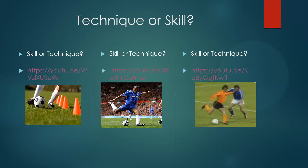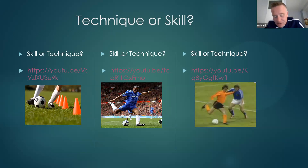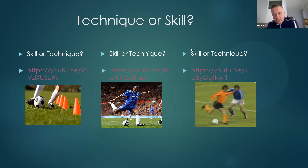Craig's view: skill is the application of a technique in a game-like environment, basically under pressure. Someone juggling at halftime is like the circus act — those people are at halftime because they can't do it under pressure during the game. The presenter agrees with the key point: skill is the application of technique — how we do it, when we do it, why we do it — and there is an element of pressure involved.